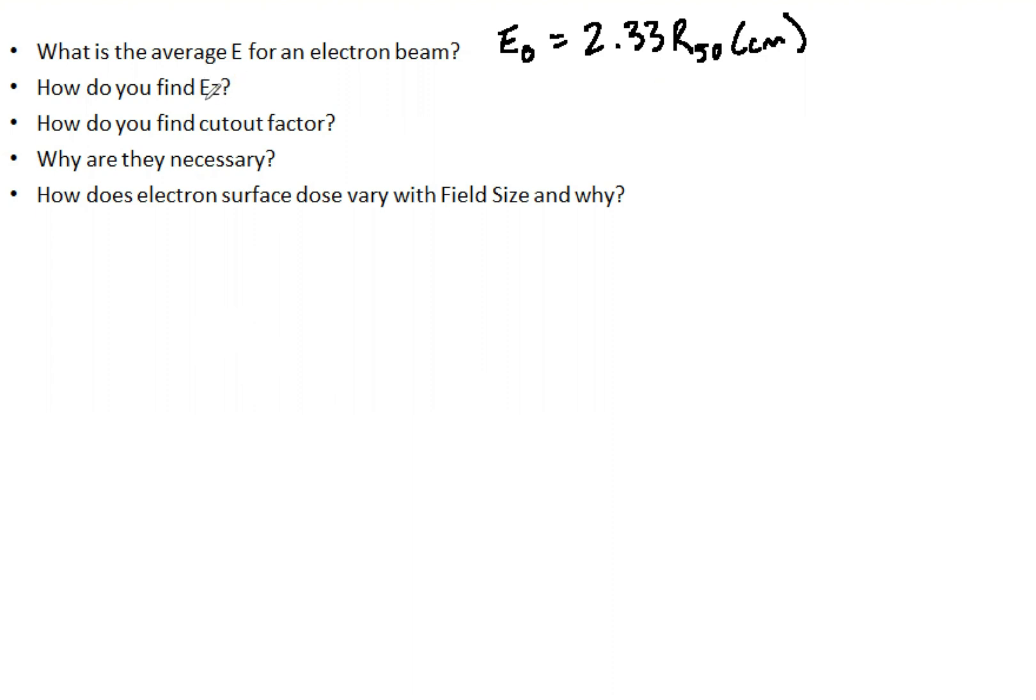Now, EZ is the energy at depth Z. This is closely related to what we just discovered. We take the mean energy and multiply that by one minus the depth that we want divided by the practical range. That will give you the energy at whatever depth you are considering, and this has clinical implications too.